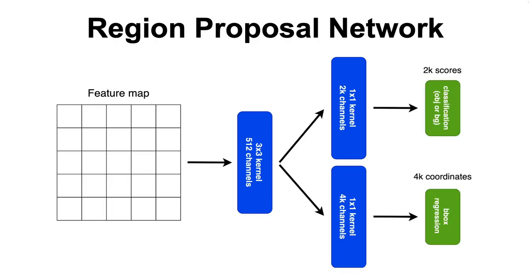The classifier contains 2k scores for each anchor corresponding to the two classes we are using, object and background, and the bounding box regression contains 4k scores, one for each corner of the box.